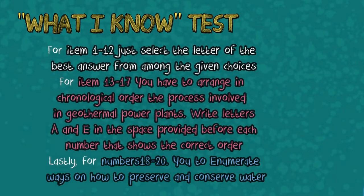Before we begin to discuss our lesson for today, answer the 'What I Know' test. For items 1 to 12, select the letter of the best answer from the given choices. For items 13 to 17, arrange in chronological order the process involved in geothermal power plants. Write letters A to E in the space provided before each number that shows the correct order.